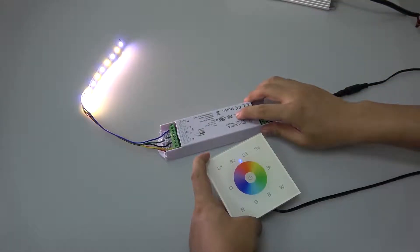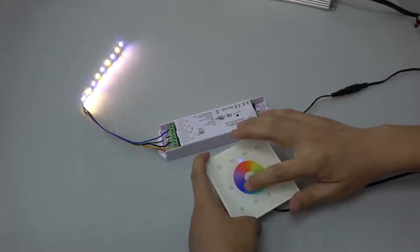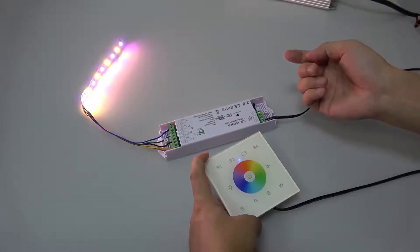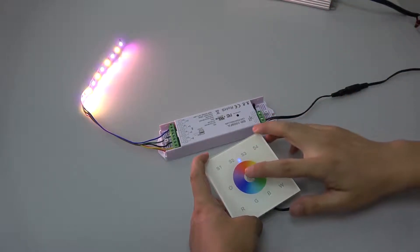Short press the learning key and touch the color wheel. LED light flashes, which means pairing successful. Now you can control it.